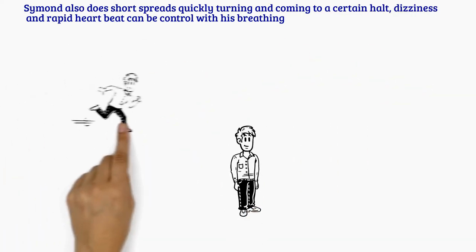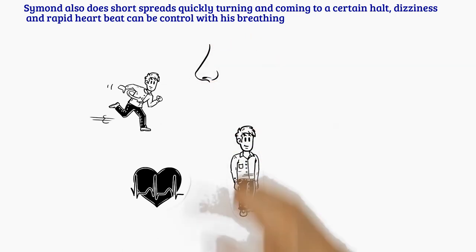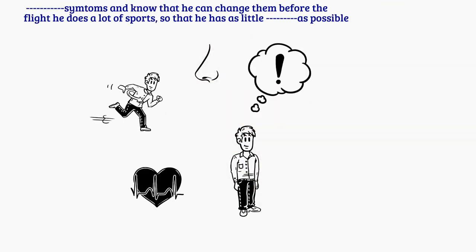Simon also does short sprints, quickly turning and coming to a sudden halt. Dizziness and a rapid heartbeat can be controlled with his breathing. This helps him get used to all the symptoms and know that he can change them.